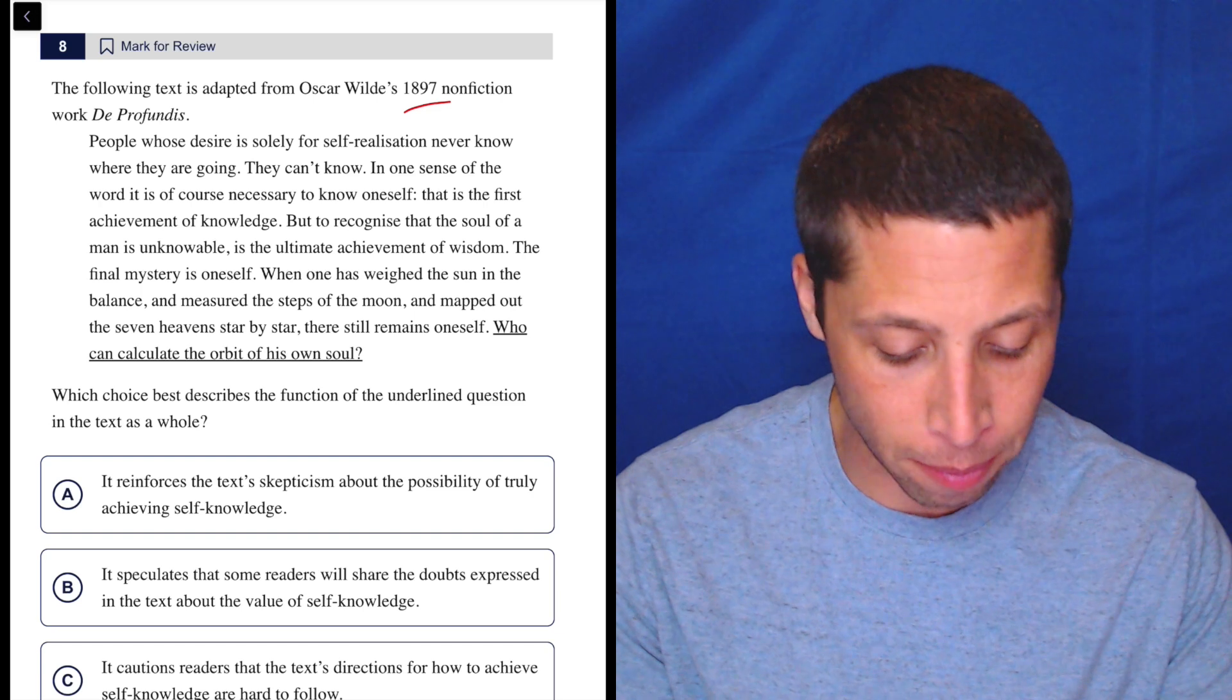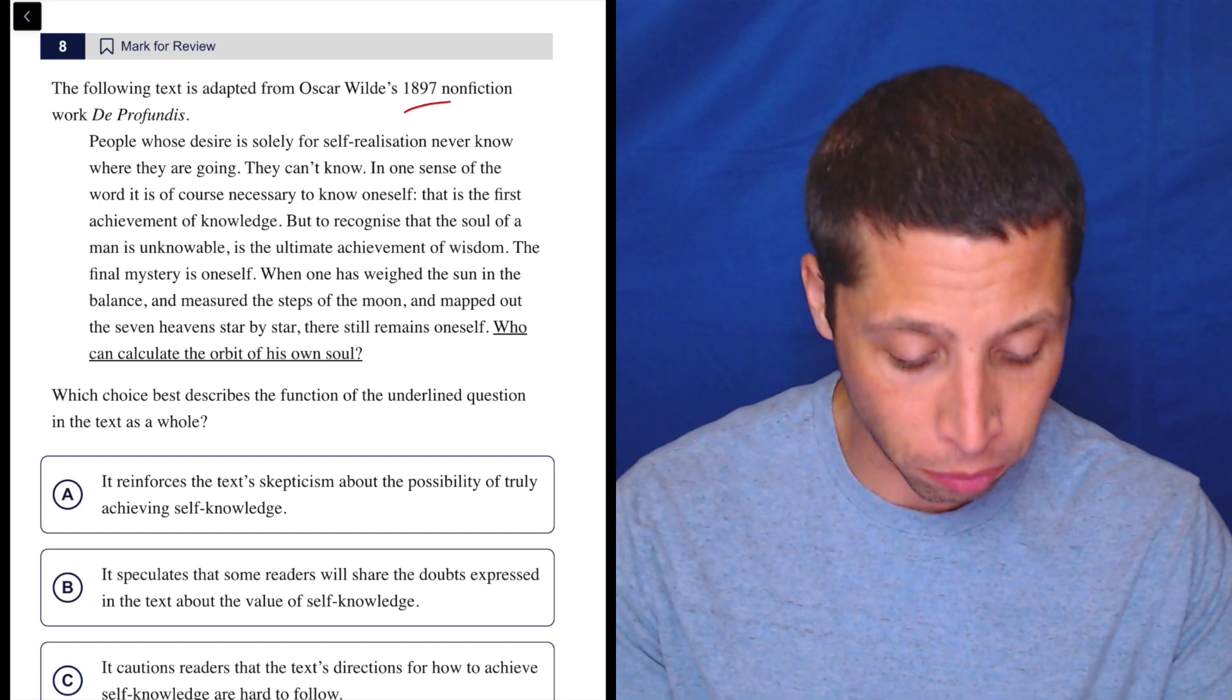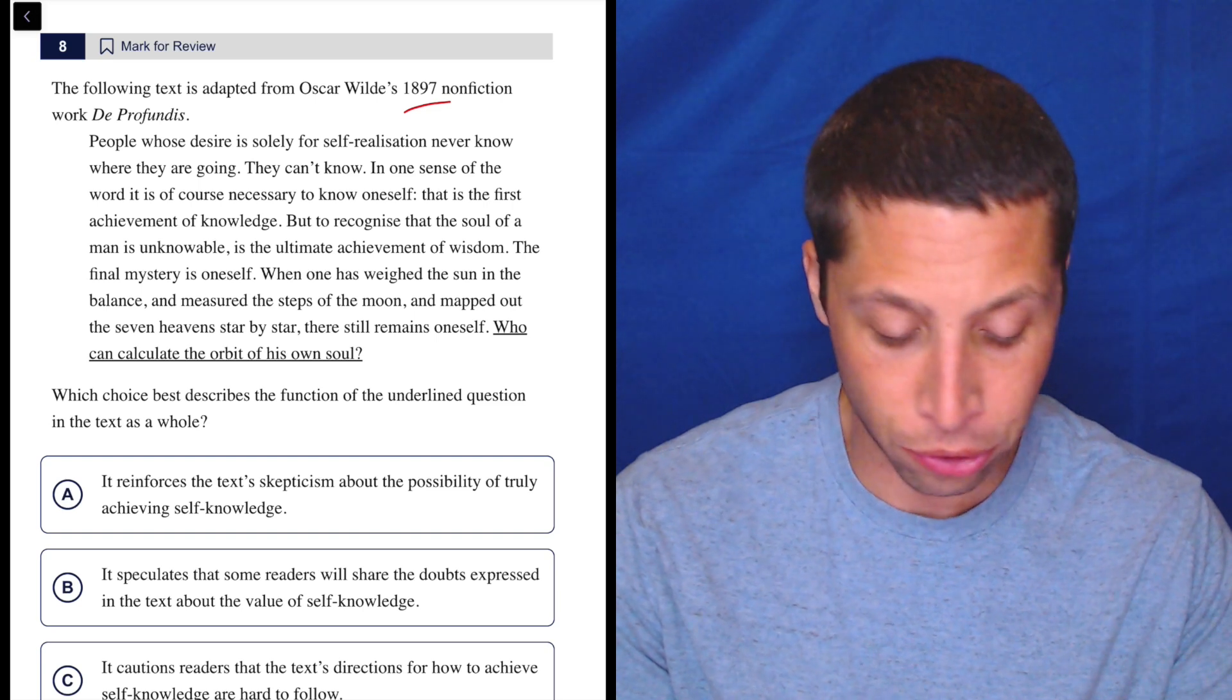When one has weighed the sun in the balance and measured the steps of the moon and mapped out the seven heavens star by star, there still remains oneself. Who can calculate the orbit of his own soul?